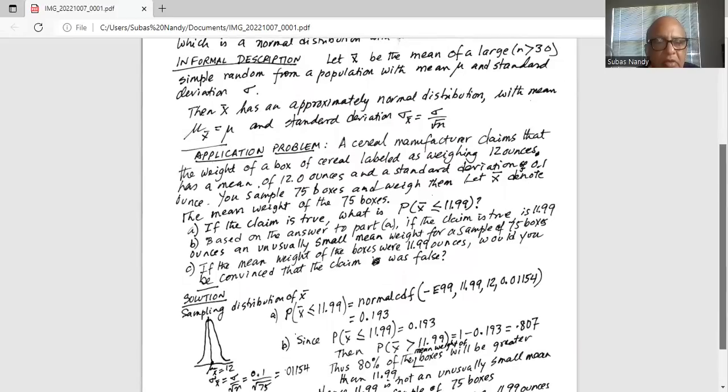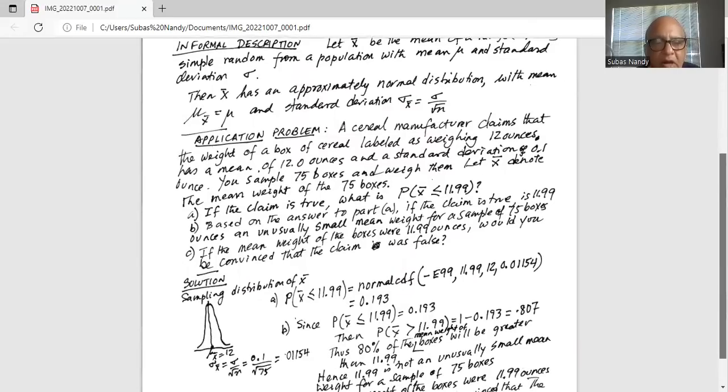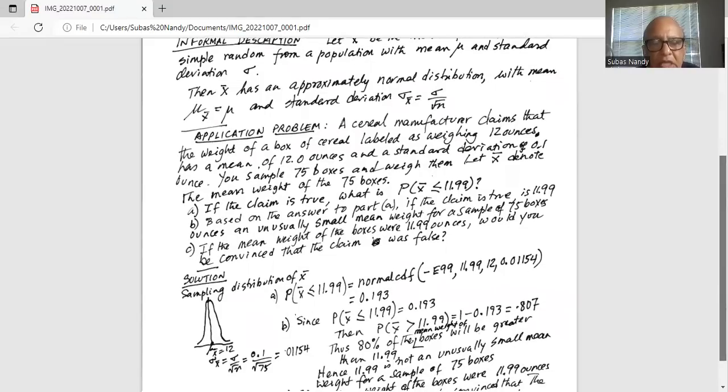So, solution. Sampling distribution of x bar. You know sampling distribution of x bar has a mean mu x bar equal to mean of the population equal to 12.